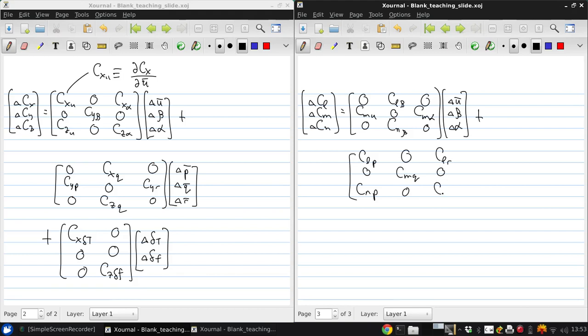CLP 0, CNP 0, CMQ 0, CLR 0, CNR times delta P bar, delta Q bar, delta R bar, plus again a control portion